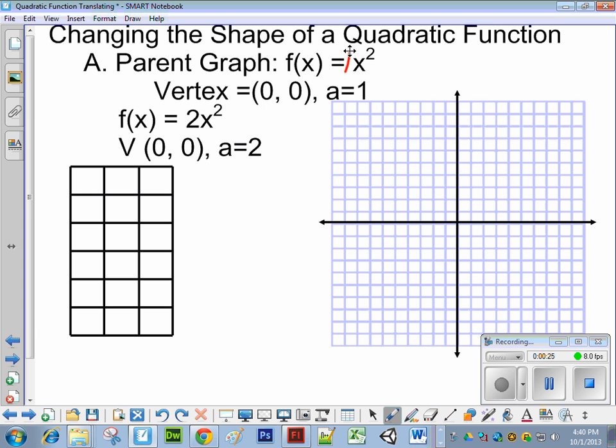Now what would have happened if I put in a different function, f(x) equals 2x squared? Now your vertex is still the same, (0, 0), but this time the a value is 2. So I'm going to do a quick table here. I'm going to write in x right here, x squared here, and 2x squared here.